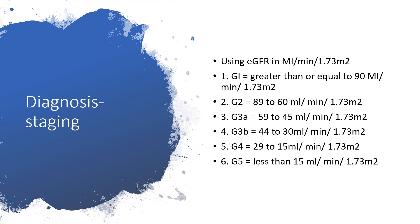For diagnosis, using estimated glomerular filtration rate values we can stage kidney disease from G1 to G5, with G5 being end-stage renal disease. For details on G1 through G5 you can check my presentation on chronic kidney disease. Going straight to G5: that is when the estimated GFR is less than 15 ml per minute per 1.73 m² — that is end-stage renal disease.